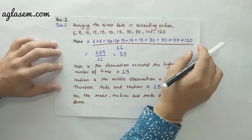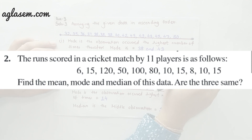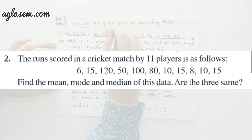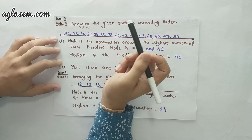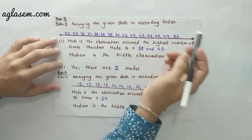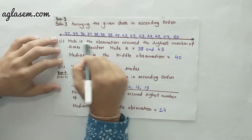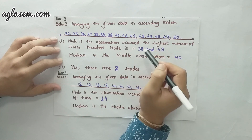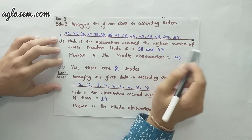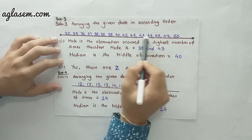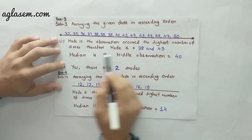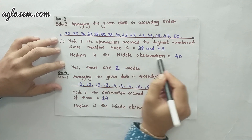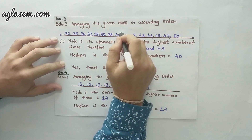Moving forward to the third question: the weight in kilograms of 15 students of the class. You can see the data on the screen. We have to find the mode and the median. Before calculating, let's arrange this in ascending order, as I have said, which will help you. The mode of this question is 38 and 43. You might be thinking there are two modes — yes, there can be, because 38 and 43 are both repeated three times in this data series. So there can be two modes. The median is the middle observation, and the middle observation is 40, which is the midpoint of this data series.